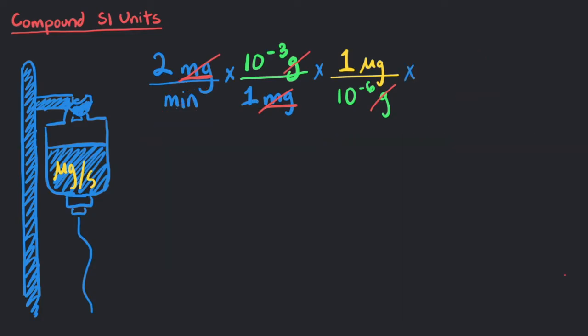To cancel the minutes, we need to multiply the expression by 1 minute over 60 seconds. This way, we can replace the minutes with seconds on the bottom. The units are set for our final answer. We just need to multiply everything now.